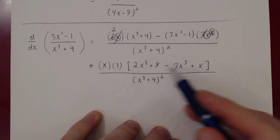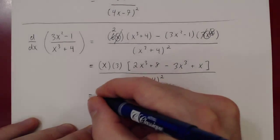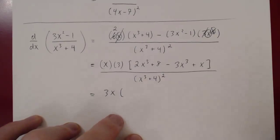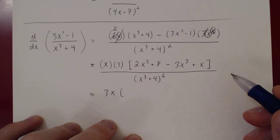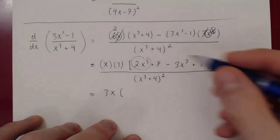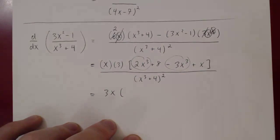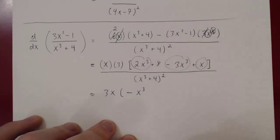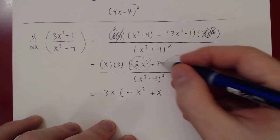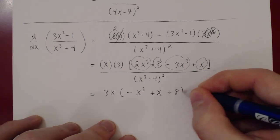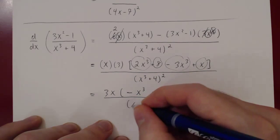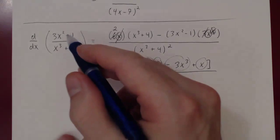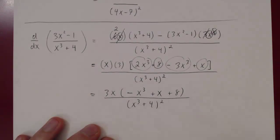Now we regroup similar powers of x. We have two cubic terms: 2x³ − 3x³ = −x³. There's a single x term: +x. And a single constant: +8. So the final answer is (−x³ + x + 8) over (x³ + 4) squared. And there you have it — the derivative of (3x² − 1)/(x³ + 4) simplified is that expression.